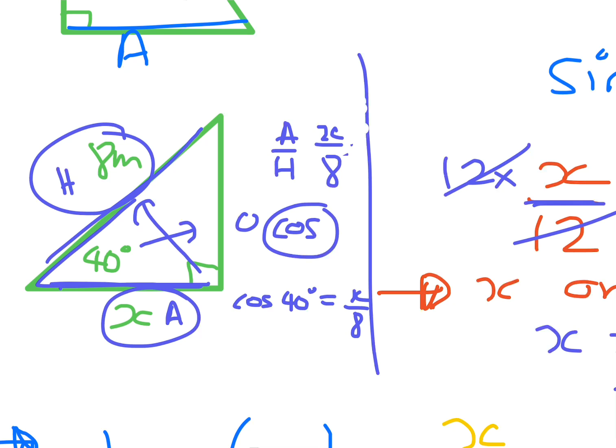So to get X by itself, we just need to times by 8. So X is 8 times cos 40. So remember, if it's on top, it times. So once we get X, it's on top.